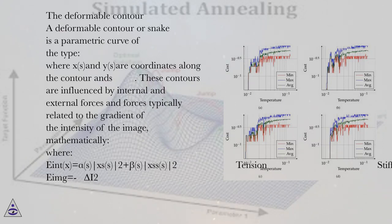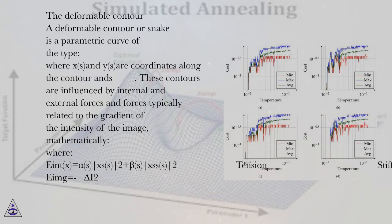A deformable contour, or snake, is a parametric curve where x(s) and y(s) are coordinates along the contour. These contours are influenced by internal and external forces. Mathematically, the internal energy E_int equals alpha(s)|x'(s)|^2 plus beta(s)|x''(s)|^2, where alpha and beta control tension and stiffness respectively.